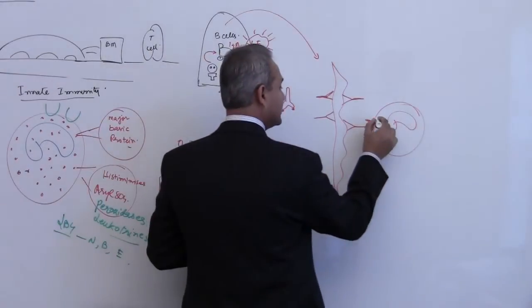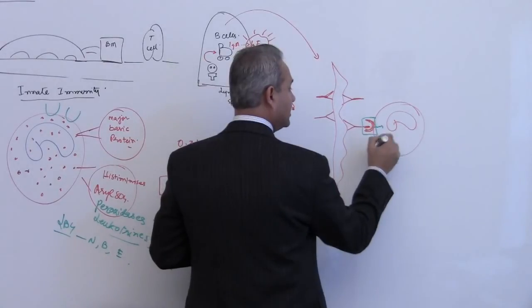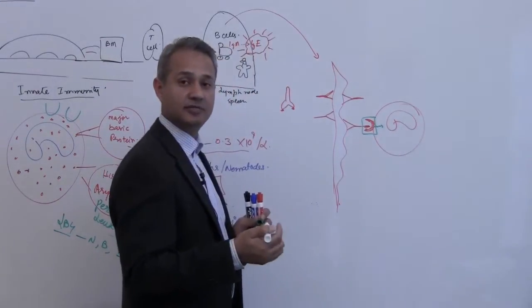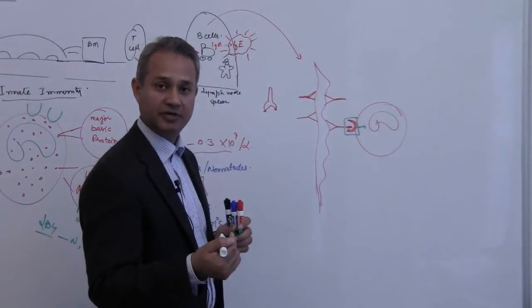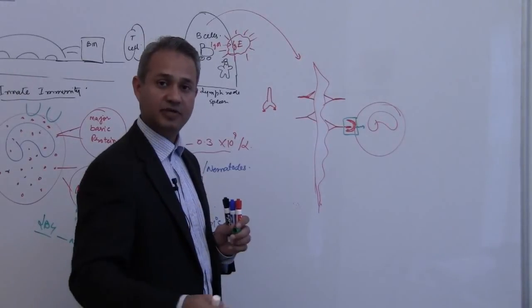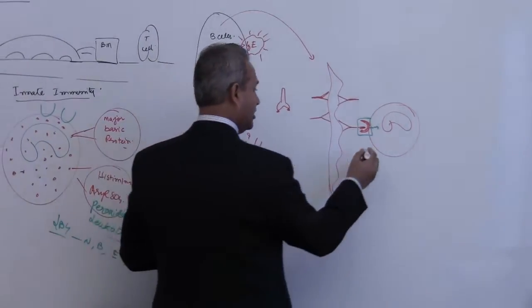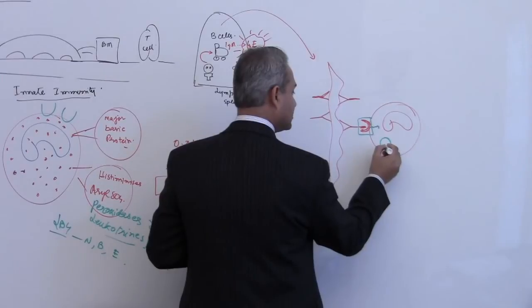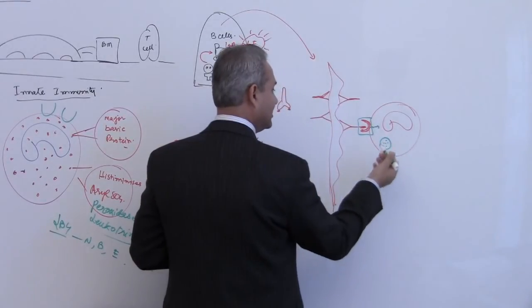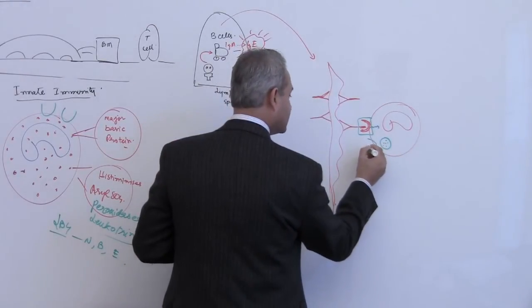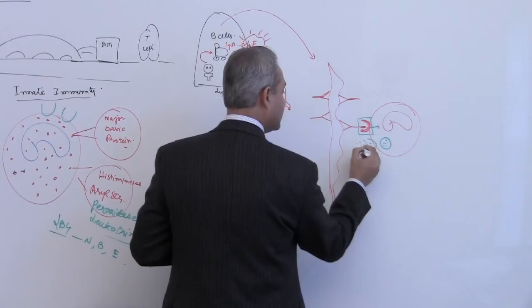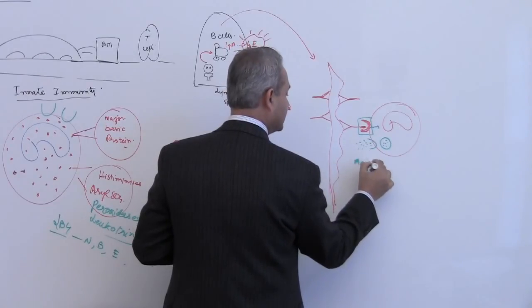When this engagement occurs, that causes the second messenger system inside the eosinophil to become activated. Once again the calcium influx, once again the degranulation. So what happens is these vesicles which were sitting in, I am making them green, they should be red, they come on the surface and the major basic protein is released.